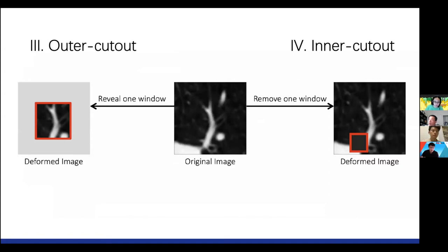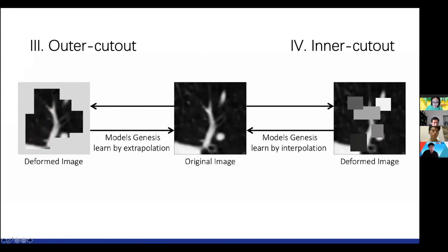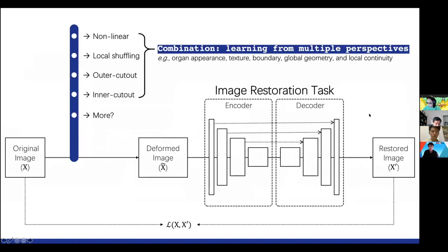We also propose outer cutout and inner cutout, where some small regions are hidden in the model by random values. In order to restore the original image, the model must learn global geometry and spatial layout. At the same time, the model must learn local continuities of the object. These transformations help the model learn image representation.